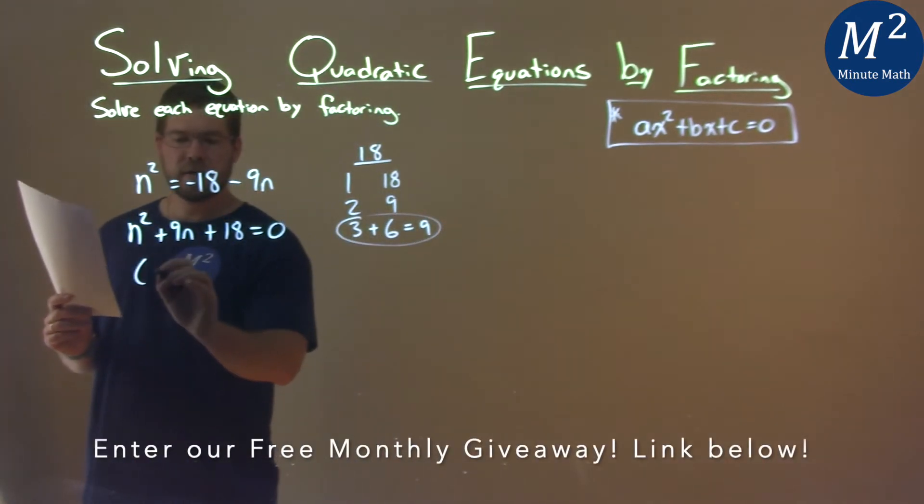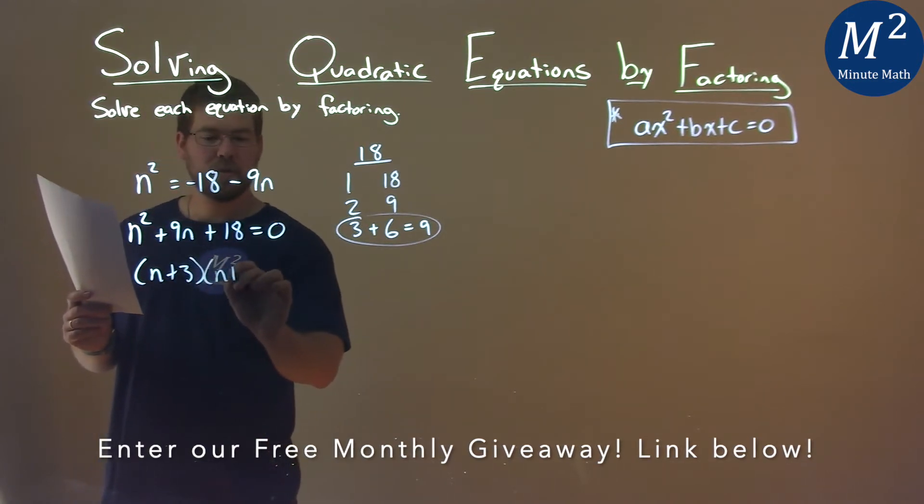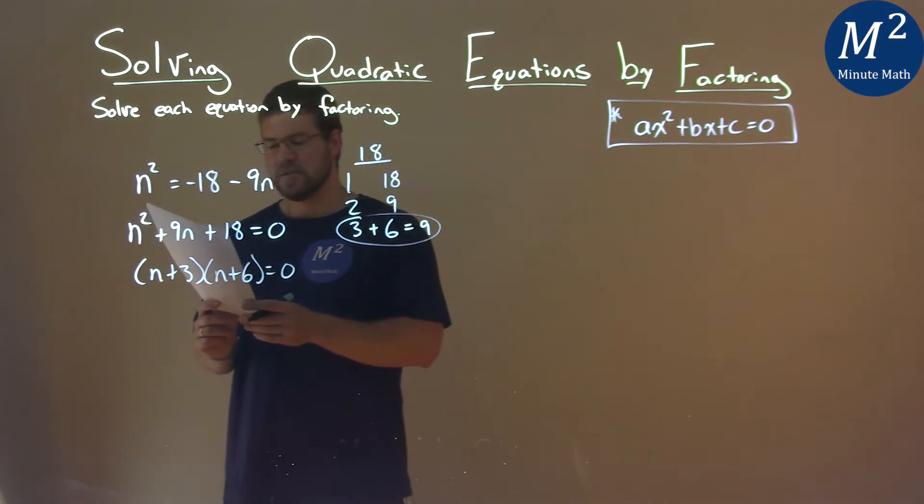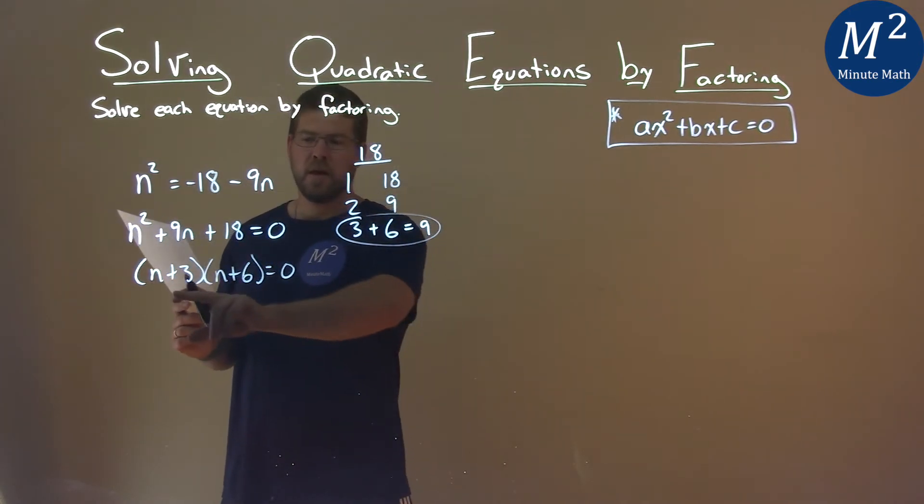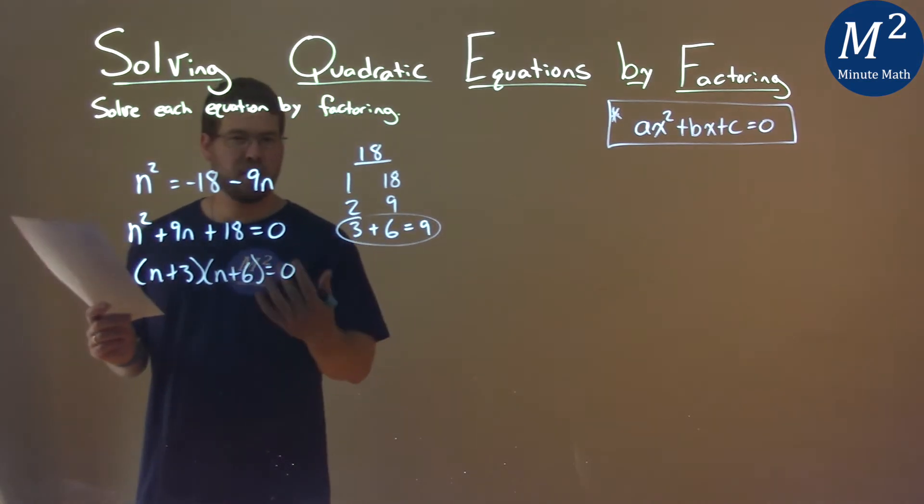So this breaks down to be factored form of n plus 3 times n plus 6 is equal to zero. And now we want to solve this. We can take both parts here individually and we set them equal to zero because it's already in factored form.